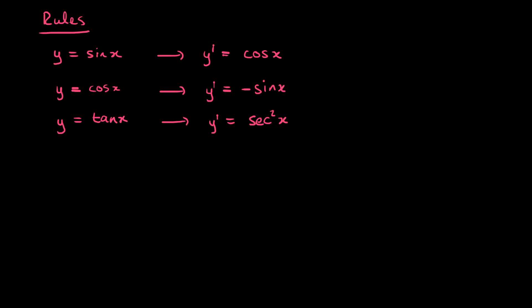Okay guys, in the last video we learned how to differentiate sine, cos and tan. In this video we want to think about something a little bit more advanced. What happens if we were to differentiate a function like this? y equals sine of x squared.